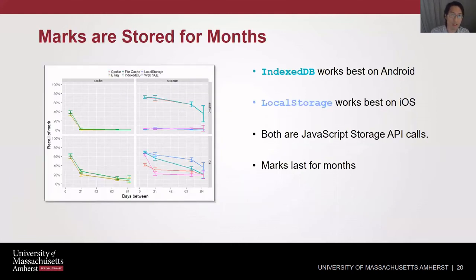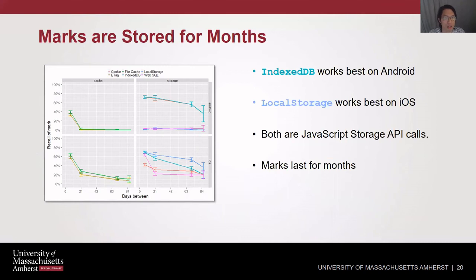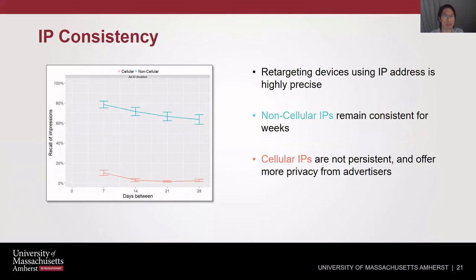Using this method in our mark persistence dataset, we found that at least some marks are stored for months. The x-axis covers 84 days — almost three months. IndexedDB storage was most persistent on Android, and localStorage was most persistent on iOS. Both are simple JavaScript calls, easy to implement as a developer, and these marks last for months. Other methods such as caching drop quickly as the cache gets evicted, but could work if we can retarget devices fairly precisely.